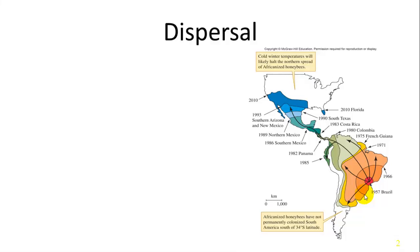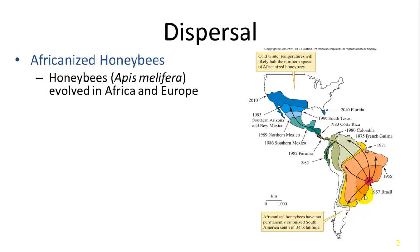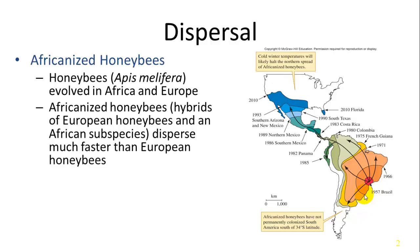Dispersal is how far they cover a geographic area, how far they go away from their native range, or after being born and becoming an adult, where do they go after that? Some examples of dispersing animals include Africanized honeybees, which originally evolved in Africa and Europe and had a number of subspecies. There was a strain that was a hybrid between European and African subspecies, and they dispersed much faster than European honeybees.